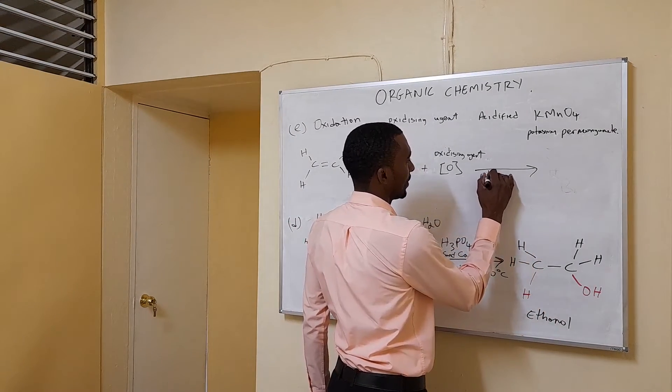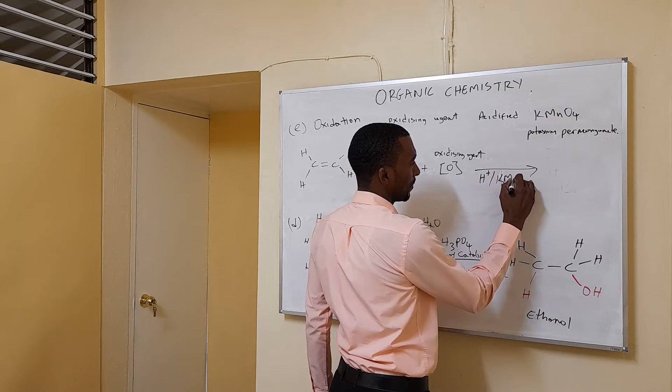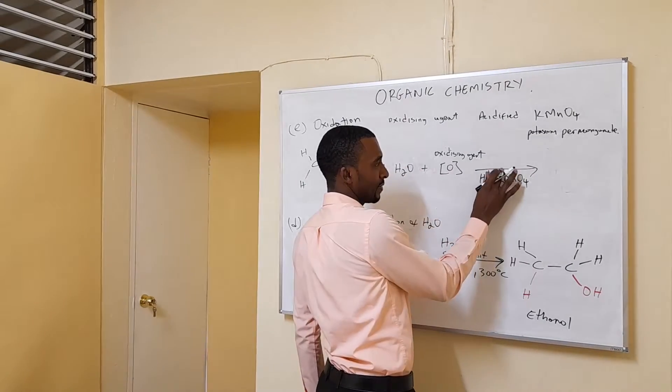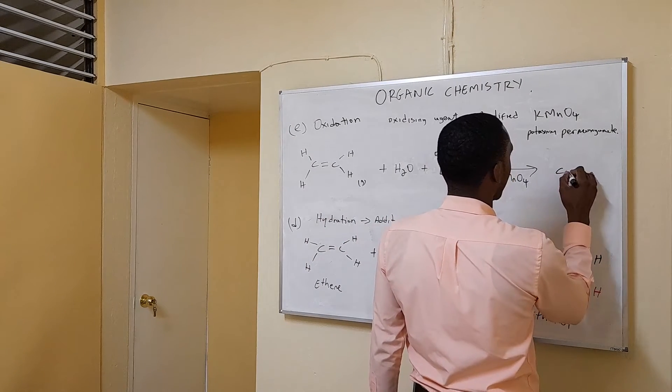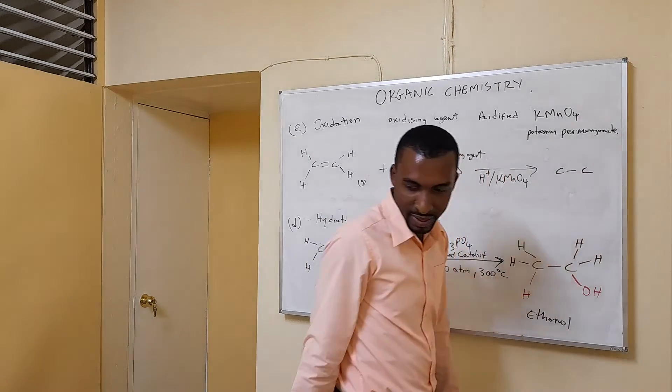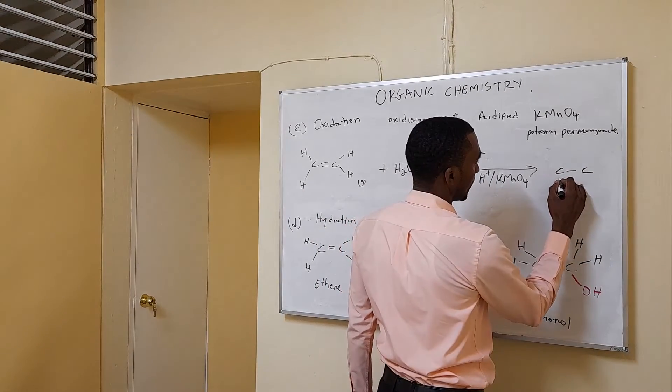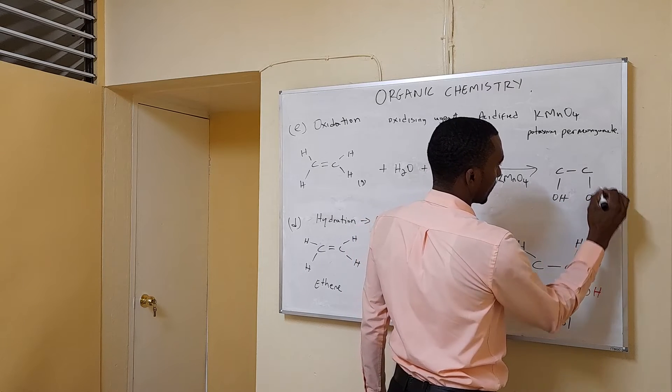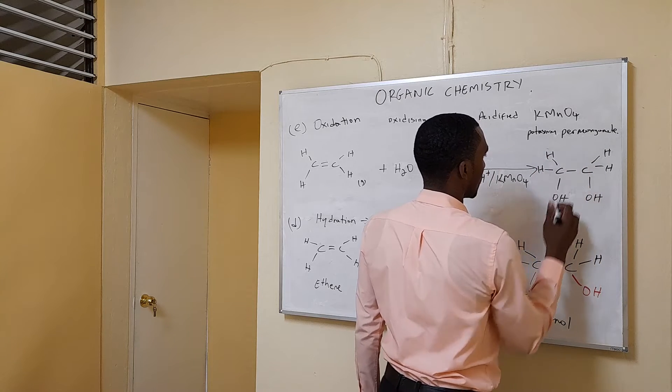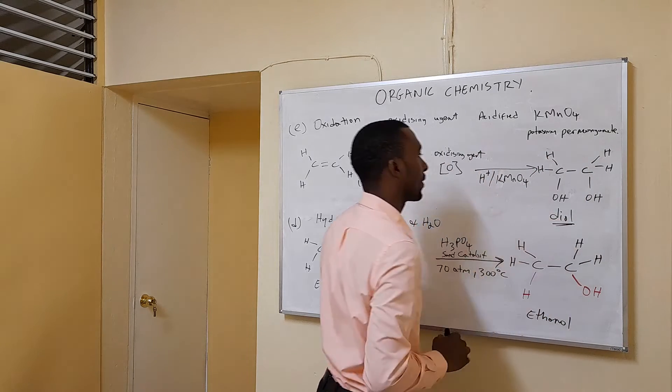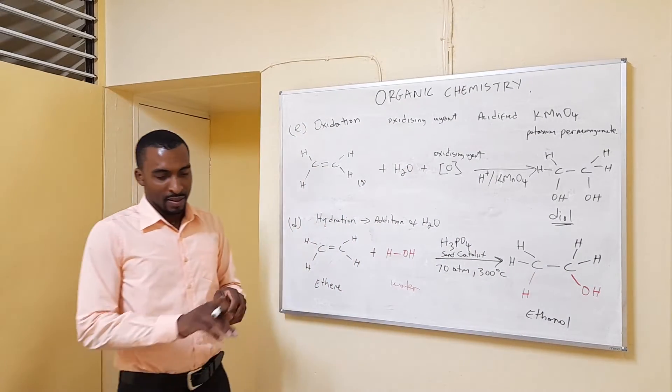We're going to put H+, KMnO4, just to indicate that it is acidified potassium permanganate. And in this case, we form the diol - that's a 2-OH group. So diol, two OH groups.